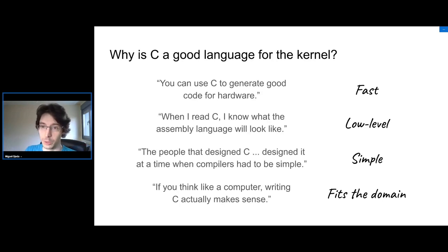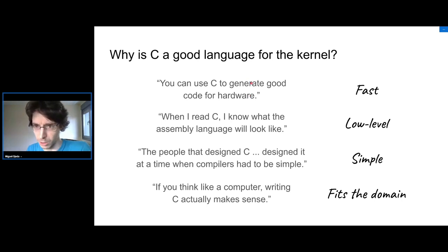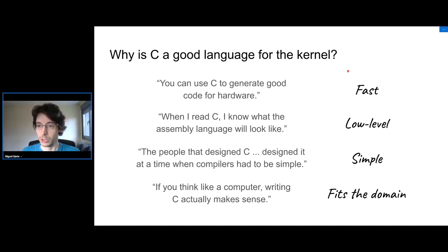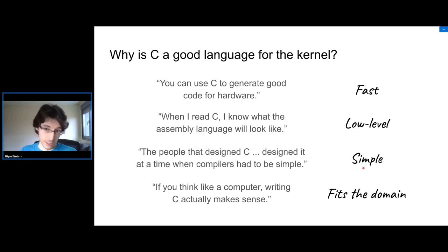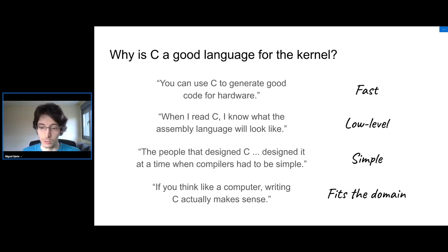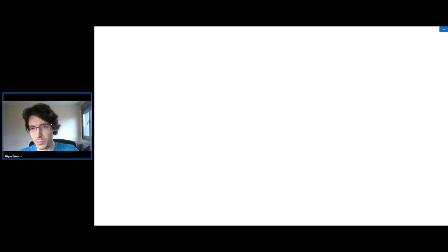Why is C good for the kernel and operating system development, which is what it was designed for? Torvalds gave some reasons: C generates fast code; it's low-level, so we can map in our heads what the assembly will look like; it's a simple language compared to C++ or even Rust; and it fits the domain, because it was designed for writing kernels and portable tools.